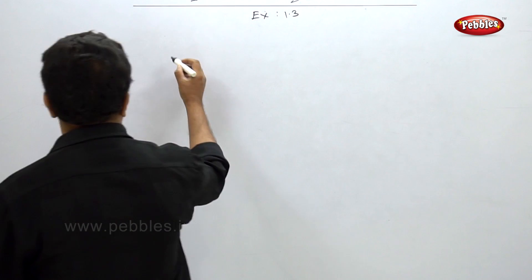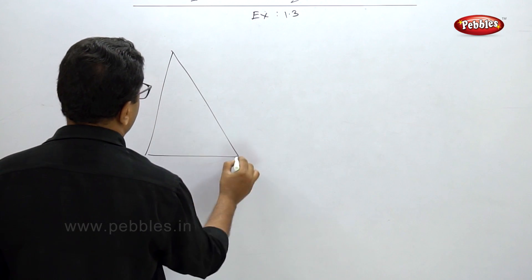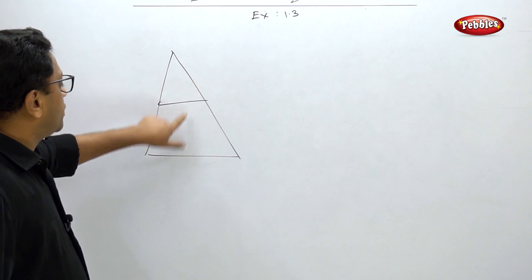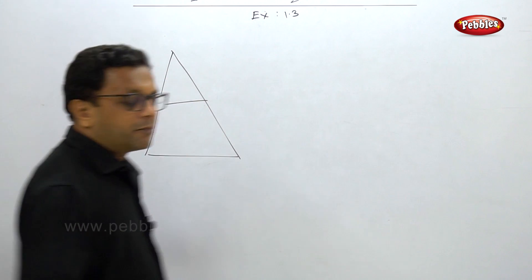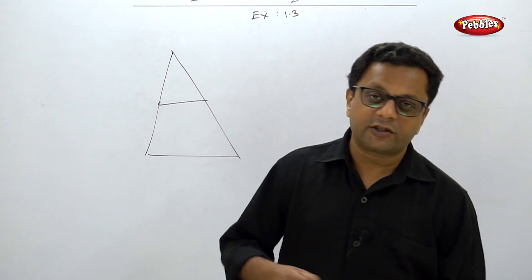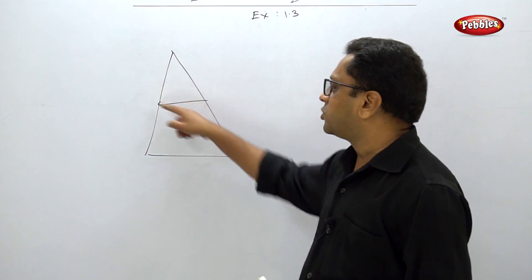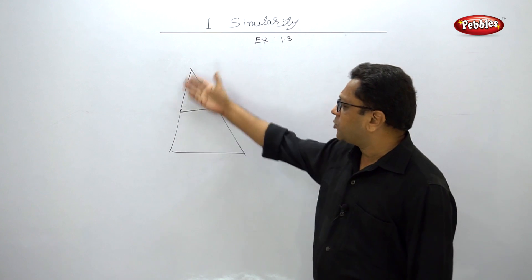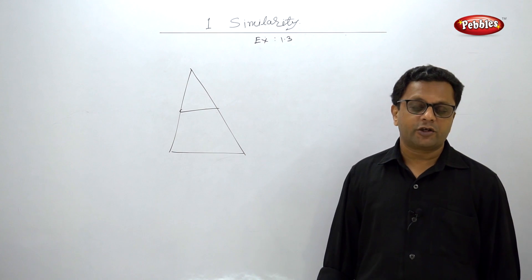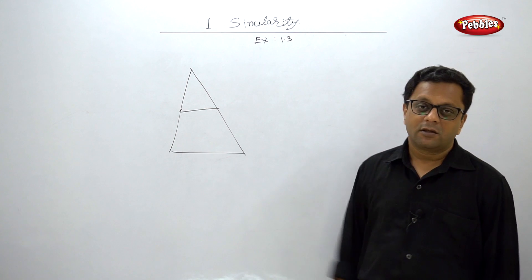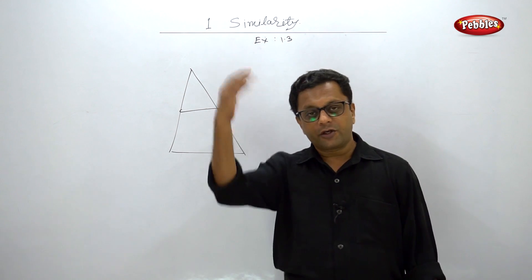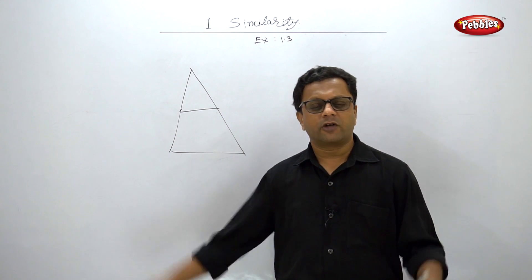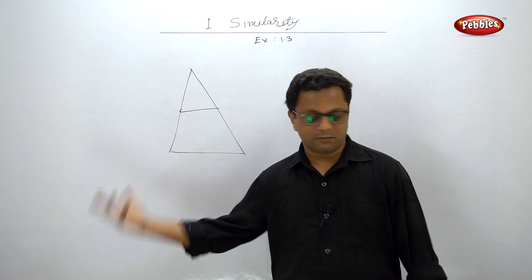In the first figure, one triangle is given and measurements of all the segments are given. You have to decide whether the two triangles — the smaller one and the bigger one — are similar or not. If the corresponding sides are in equal ratio then the triangles are similar. You just take the ratios, and if the ratios are equal, the triangles are similar.